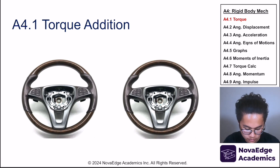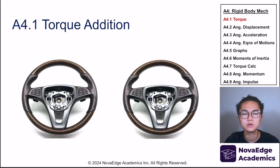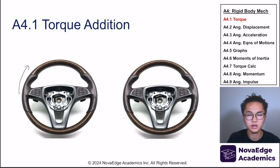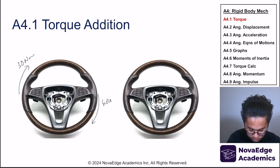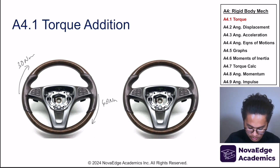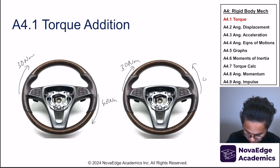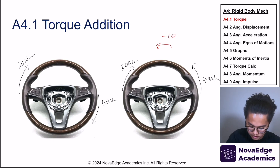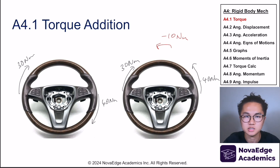Just as we can add forces, we can also add torques — but they must be in consistent clockwise or anti-clockwise directions. For example, rotating a wheel with the left hand at 30 newton-meters and the right hand at 40 newton-meters in the same direction gives a net torque of 70 newton-meters. However, if they act in opposite directions, the net torque is negative 10 newton-meters, with anti-clockwise defined as negative.